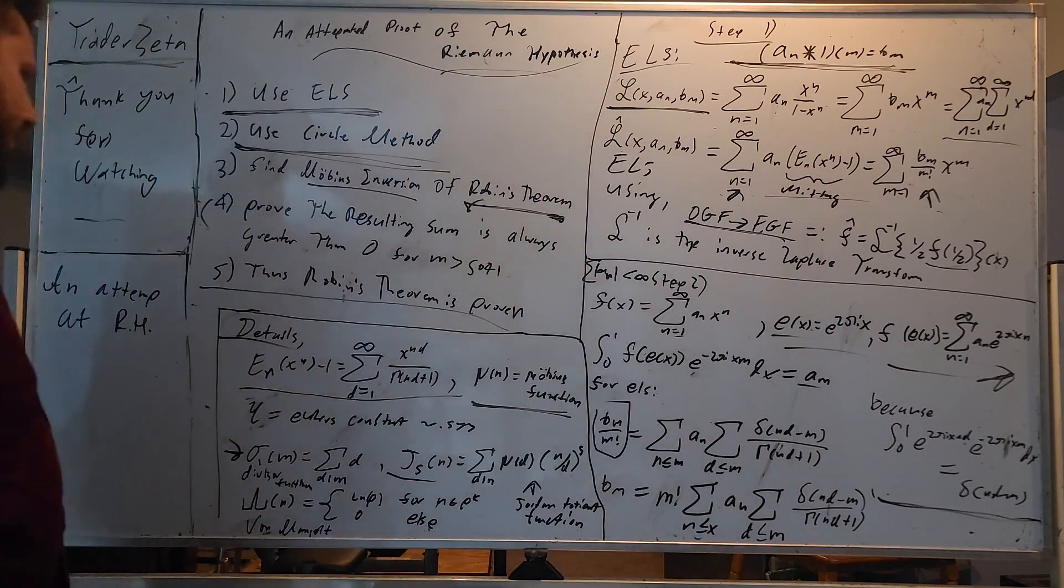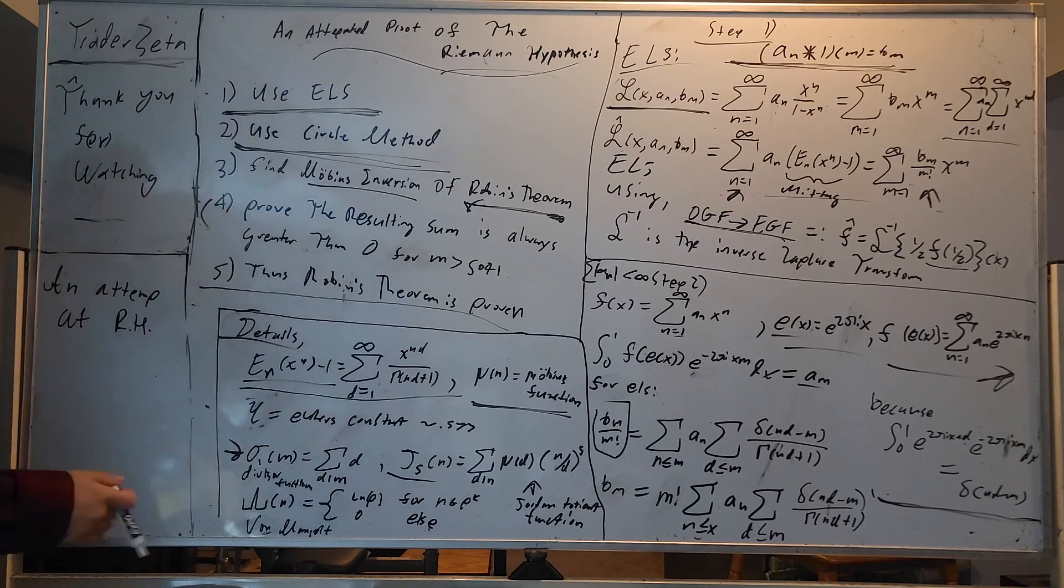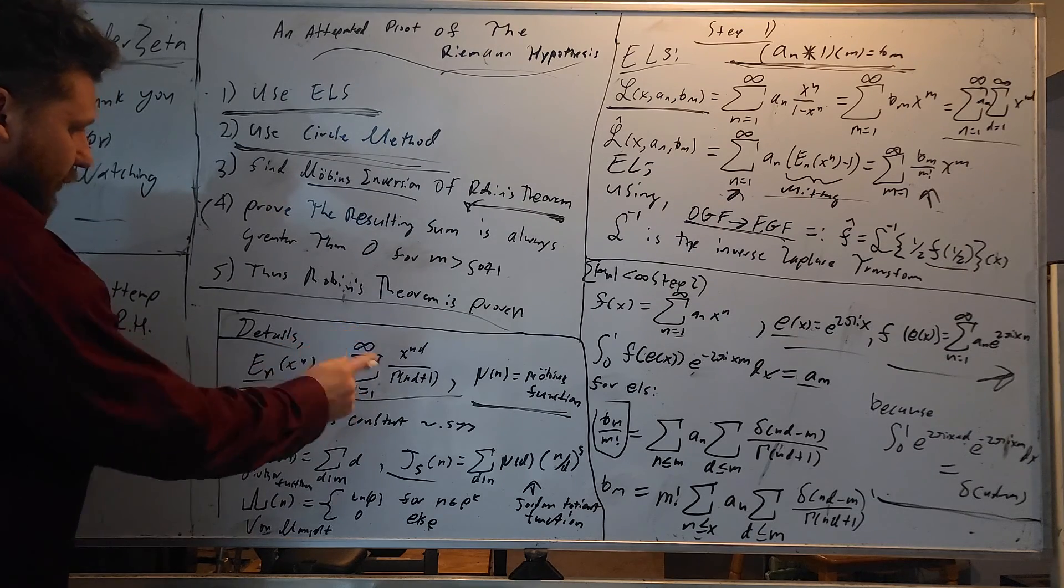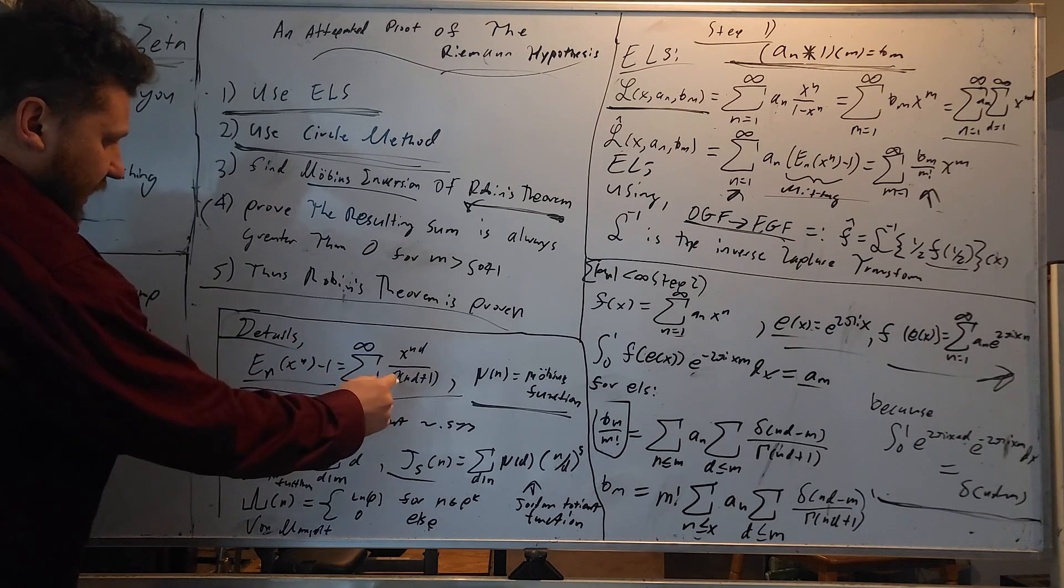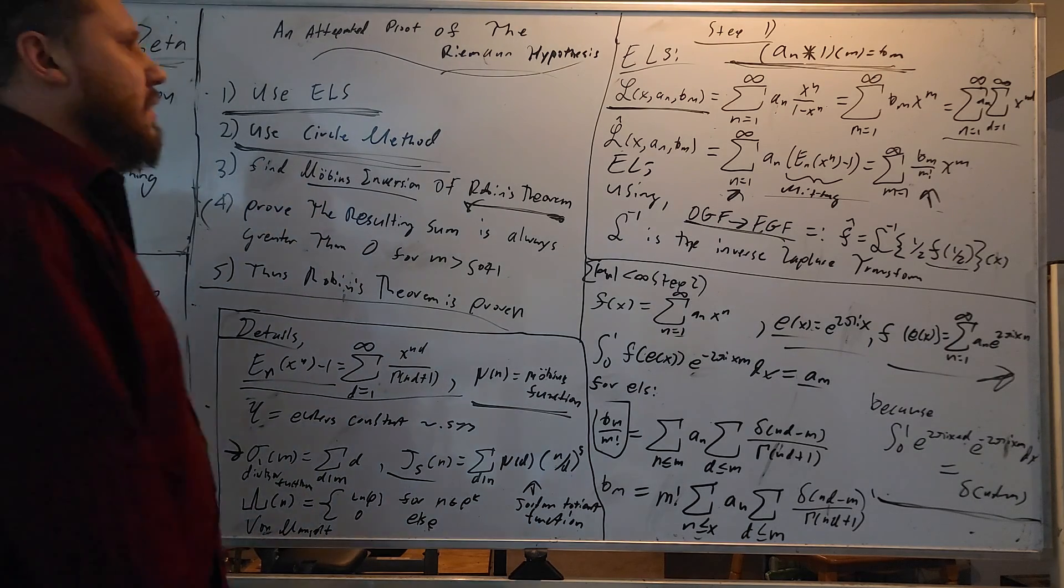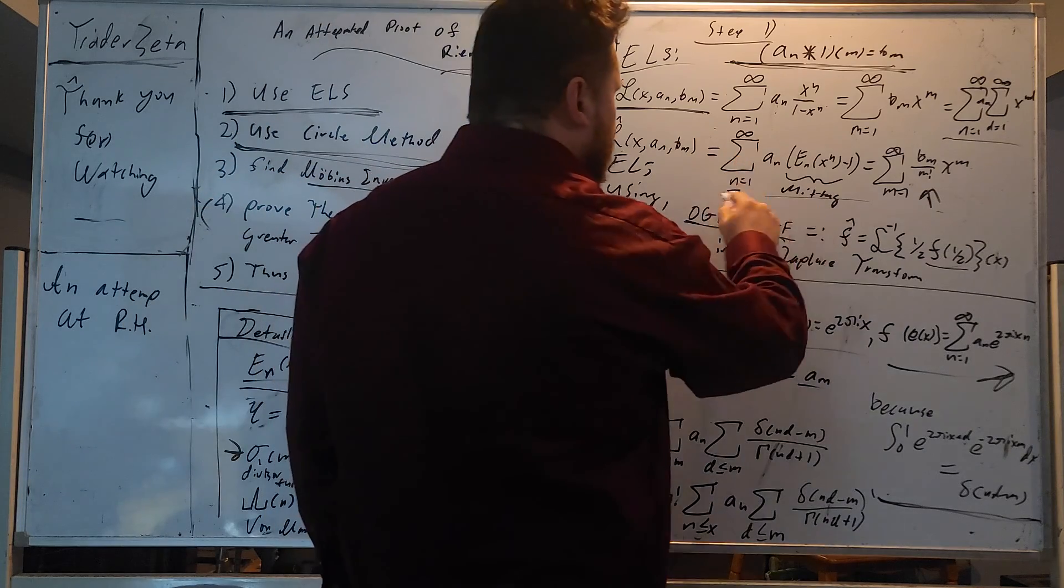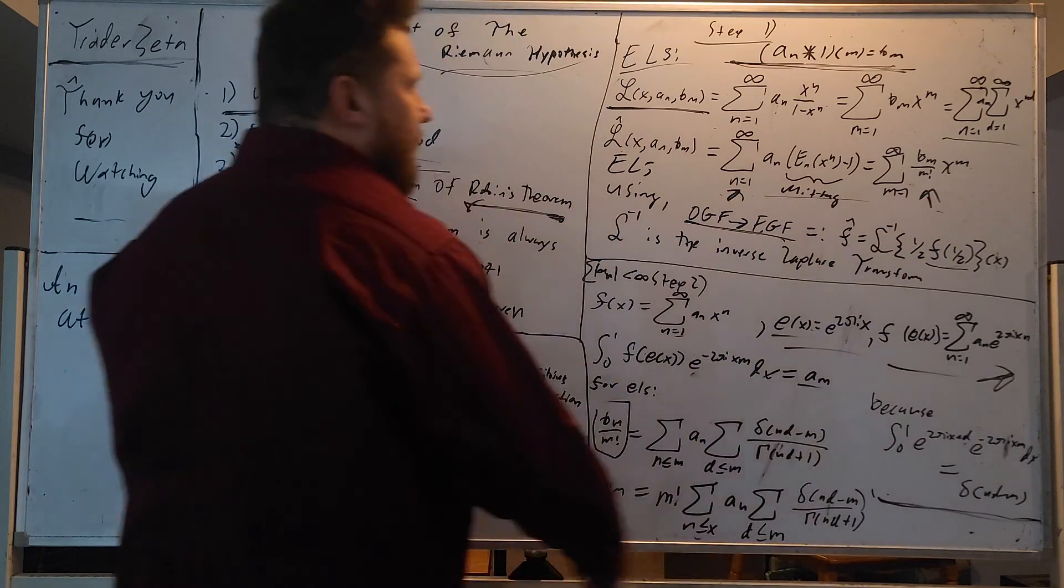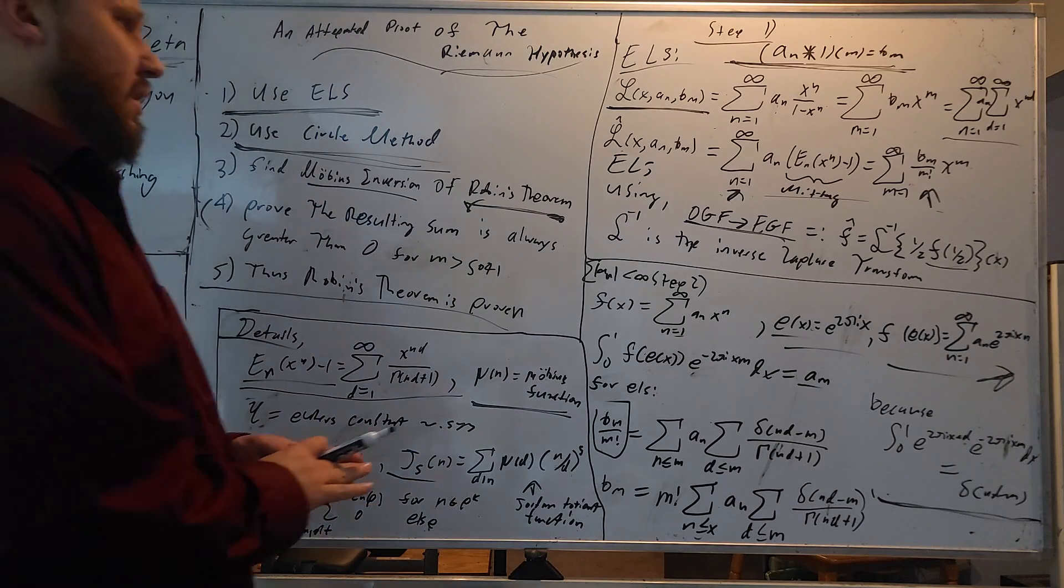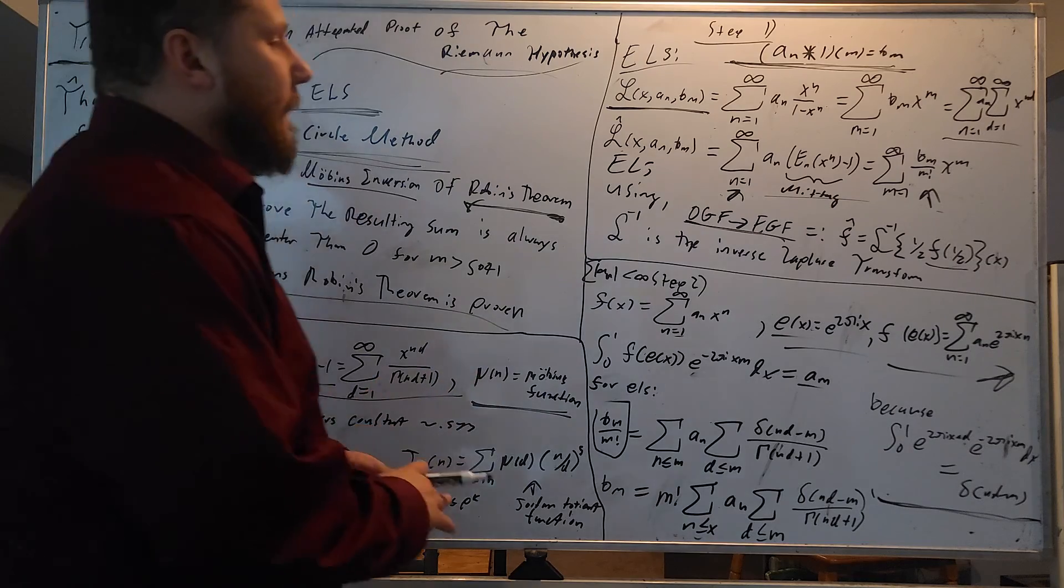So we just take our OGF, which is right here, plop in a one divided by z, multiply by one divided by z, inverse Laplace transform, go to f hat, which is the EGF. Now, when we do that, we're going to take this representation, and it transforms to this guy right here. This is the Mittag-Leffler function.